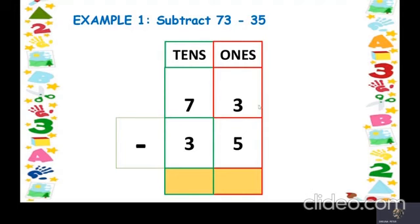Now let's come to the ones column. We have 3 and 5 there. Suppose you have 3 chocolates — can I pick 5 chocolates? No, because 3 is smaller, so we cannot subtract 5 from 3. So we are going to borrow one tenth from the tens place. We have 7 there, and when we borrow one tenth, it will become 6. That one tenth goes to the ones column, so this 3 will become 13.